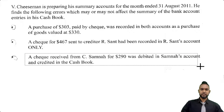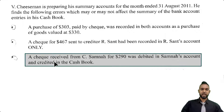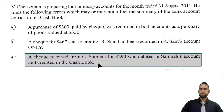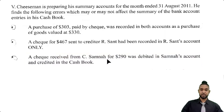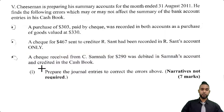Next, we have a check received from C. SAMNA for $290 which was debited in SAMNA's account and credited in the cash book. That's a reversal, because if we receive a check, we're supposed to debit the cash book and credit where it comes from — but we did the opposite. Now, what do they want us to do?